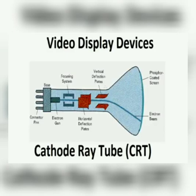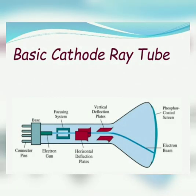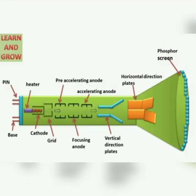A cathode ray tube is a specialized vacuum tube in which images are produced. When an electron beam strikes a phosphorescent surface, it modulates, accelerates, and deflects electron beams onto the screen to create the images. Most desktop computer displays make use of CRT for image displaying purpose.